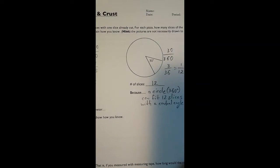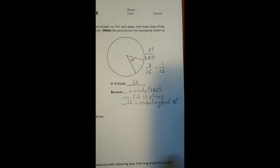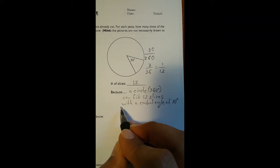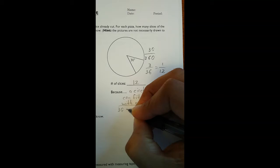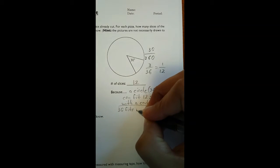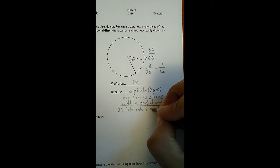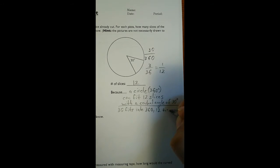So here, let me move this over a little bit. So more straightforward: 30 fits into 360 twelve times.